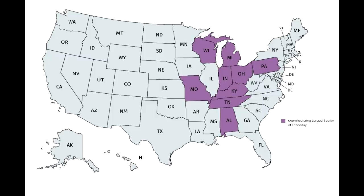This map highlights the states where the manufacturing sector is the largest part of the economy. Manufacturing tends to be a more conservative industry, and people that work in manufacturing tend to be more right-leaning. However, the manufacturing sector is not growing anywhere near as much as the high-tech sector, and these states aren't growing as much as the high-tech ones. You compare the population growth rates and it's not even close. So left-leaning people are often leaving these states and moving to states that offer more jobs for left-leaning people.